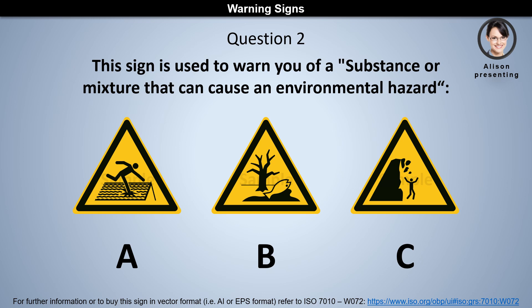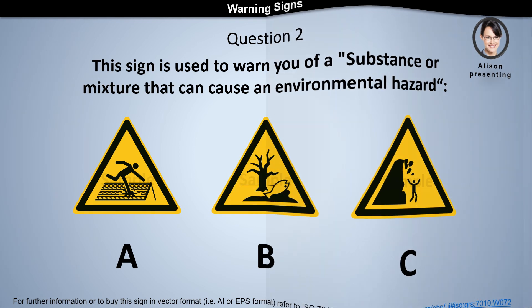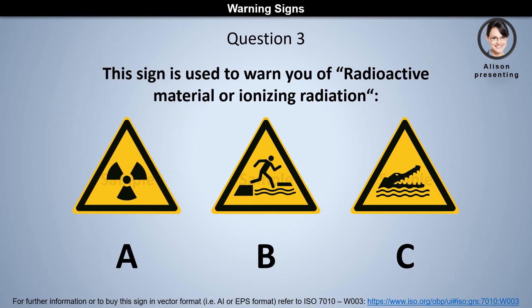Question 2: This sign is used to warn you of a substance or mixture that can cause an environmental hazard. Is it a, b, or c? The answer is b.